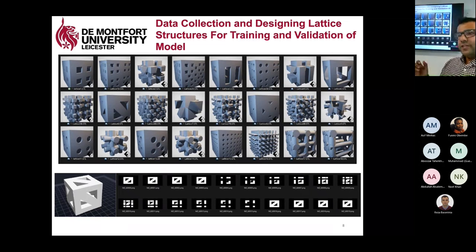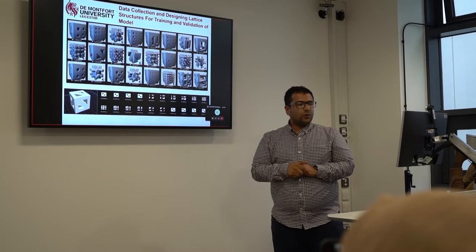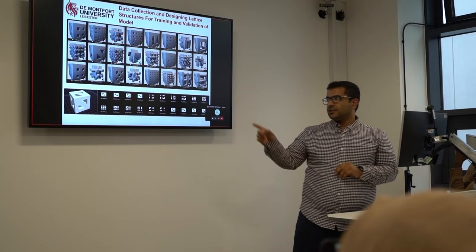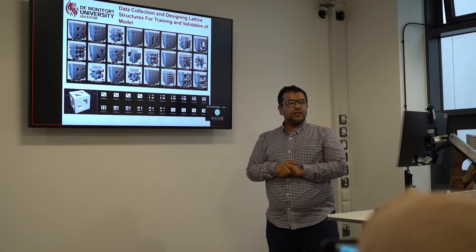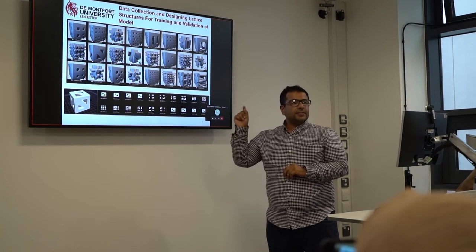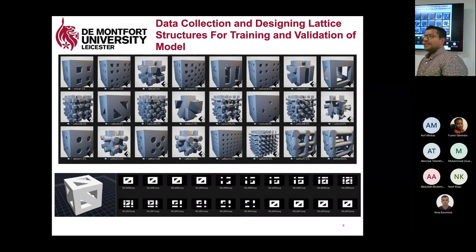In order to achieve this goal, we created a database of 20 different lattice structures for training our algorithm, and also eight for testing. You can see some pictures of these lattice structures here. If we can predict porosity, Young's modulus, and shear modulus of these simple lattice structures, then we could probably do it for bone as well in the next step.